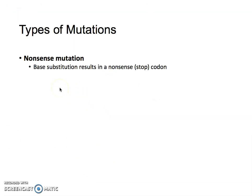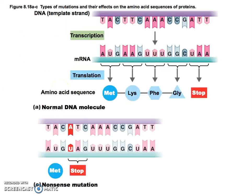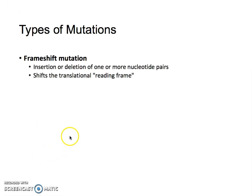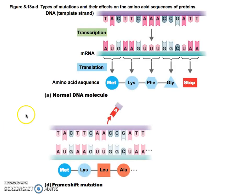Nonsense means you mutate to a stop codon — remember those three stop codons. Previously you had four amino acids in this sequence; now one mutation led to a stop codon and now you have a nonsense gene. Frameshift can be the insertion or deletion of one or more base pairs, and it shifts the reading frame. I'm going to give you a paragraph with a missense mutation so you can see what the change of one letter can do to reading a sentence.